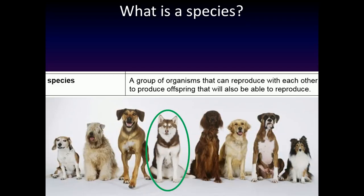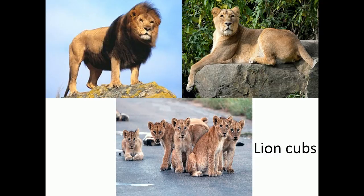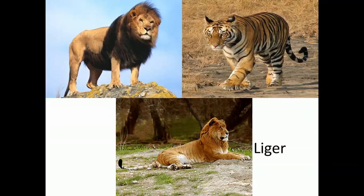We could change this definition to: a group of organisms that can breed to produce fertile offspring. All lions are the same species because they can reproduce with each other and then the offspring can also reproduce — these lion cubs are fertile, so when they're older they will also be able to have offspring. Lions and tigers are not the same species because although they can reproduce, as shown by the liger, the liger is infertile so it can't reproduce. Being the same species is not about whether you can reproduce to produce an offspring; it's whether your offspring can also reproduce.